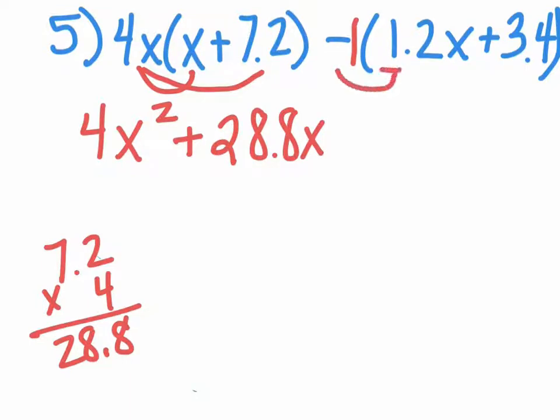Now we're going to do negative 1 times 1.2, which gives us negative 1.2x, and then negative 3.4.